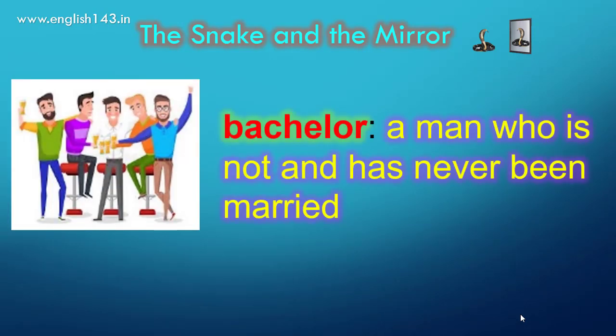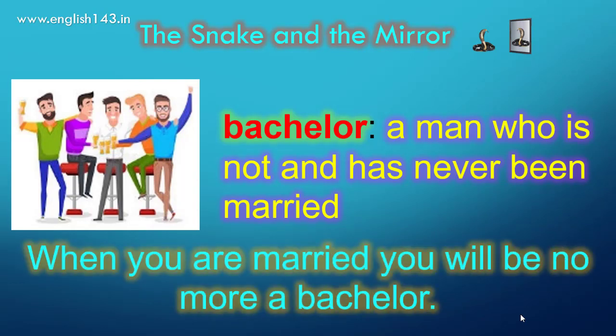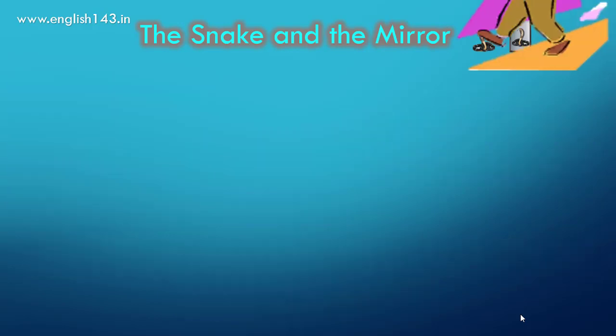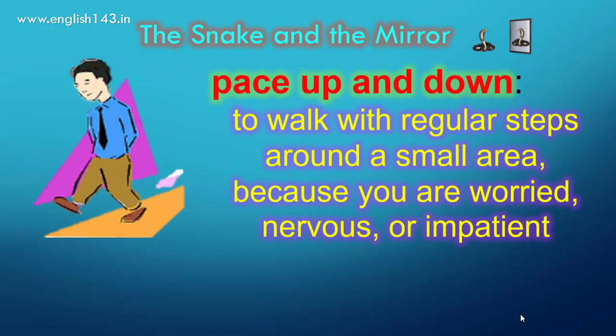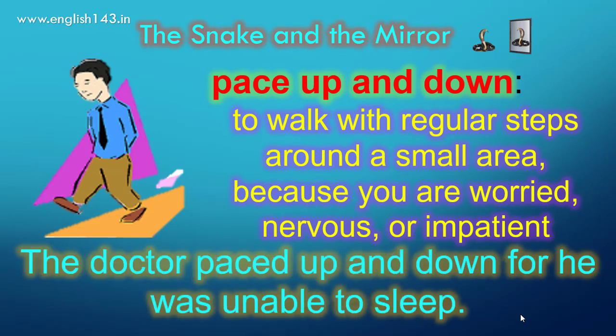Bachelor means a man who is not and has never been married. When you are married, you will be no more a bachelor. Pace up and down means to walk with regular steps around a small area because you are worried, nervous, or impatient. The doctor paced up and down, for he was unable to sleep.